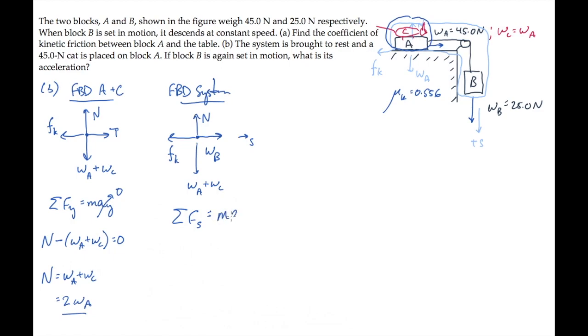So adding forces in the direction of the string equaling mass times acceleration gives us on the left-hand side the same as before, the weight of block B minus the kinetic friction force equaling the mass of the whole system, block A plus B plus the cat, times the acceleration we're looking for.